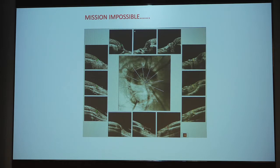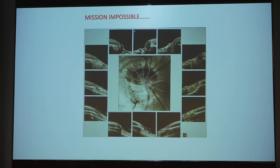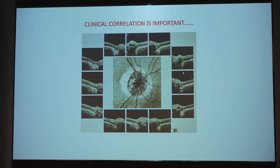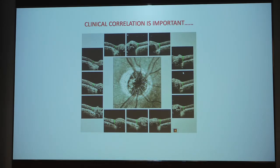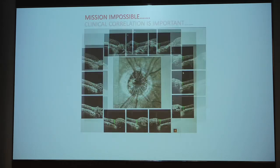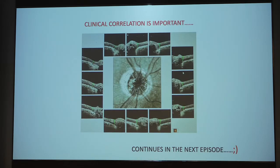In some cases, the Bruch's membrane opening lies somewhere else while the clinical disc margin lies elsewhere, and no marking may take place at all. In some optic nerve heads, irrespective of the number of times you perform the examination, it is impossible to get the Bruch's membrane opening — this is a limitation you must absolutely understand. Clinical correlation is very important. Even though all sectors are green, it doesn't mean everything is normal — this image is not going to give you an answer; it is going to help you answer. Clinical correlation is the most important thing.